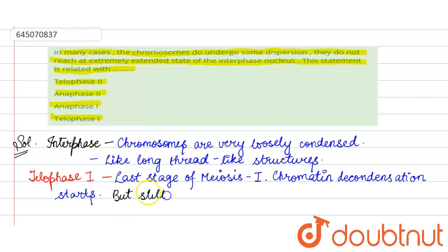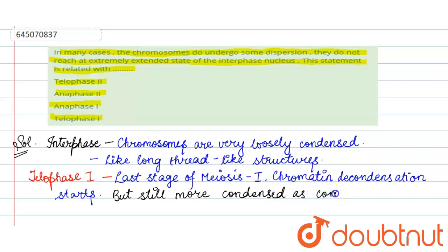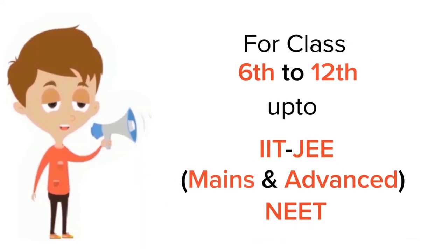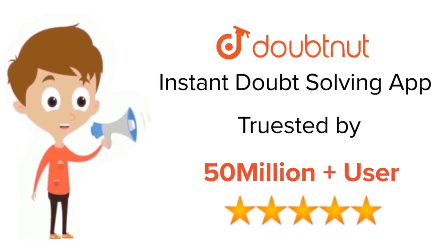After telophase first, the second meiotic division will start, but before that interkinesis will occur. Still, after decondensation, these chromosomes are more condensed as compared to interphase. So in the question, there is some condensation but less than during interphase nucleus — but still more condensed than interphase. Therefore, the answer will be telophase first.